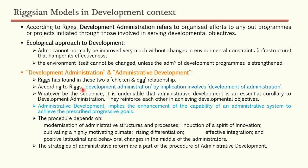According to Riggs, development administration — which is for society — by implication involves development of administration. If you want to develop society, you have to develop administration too; this is implicit. You cannot develop society without developing administration. These two terms go hand in hand; whatever the sequence, it is like a chicken-and-egg relationship.